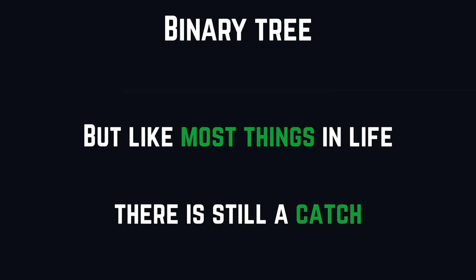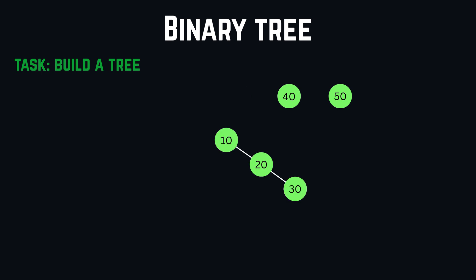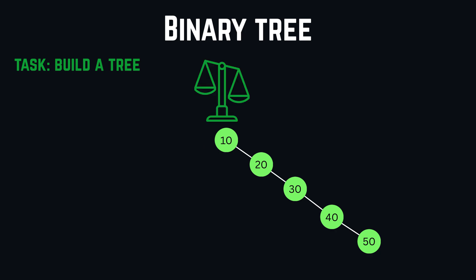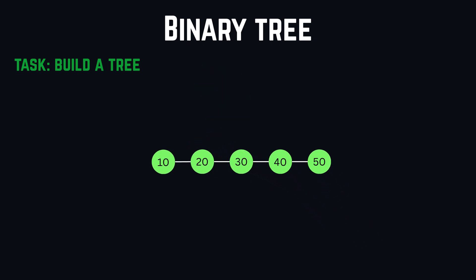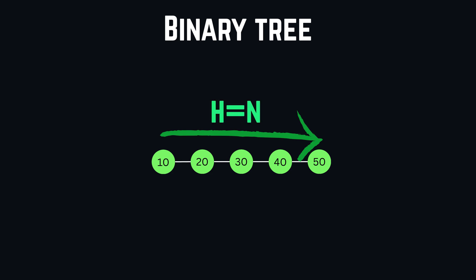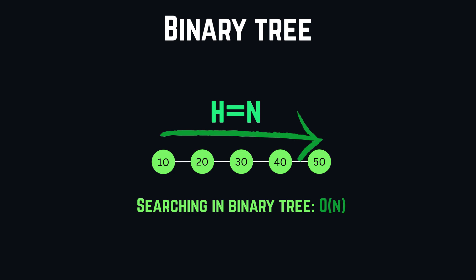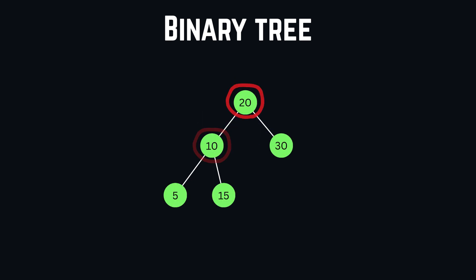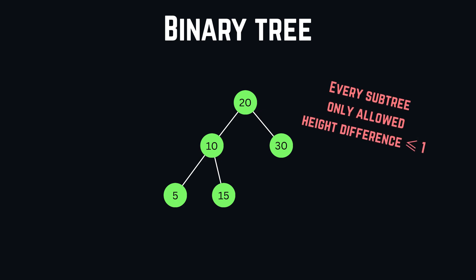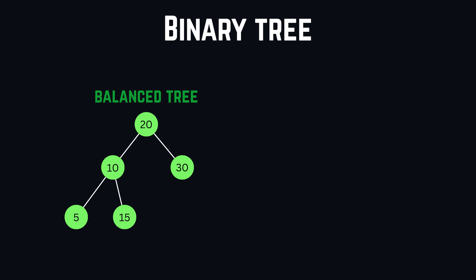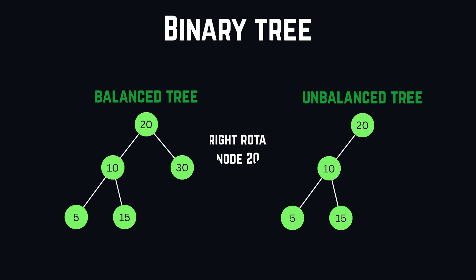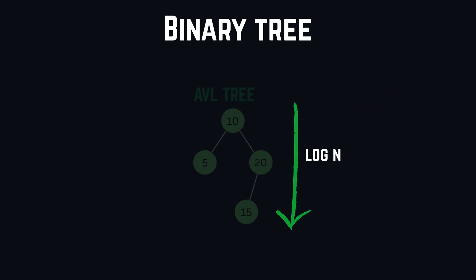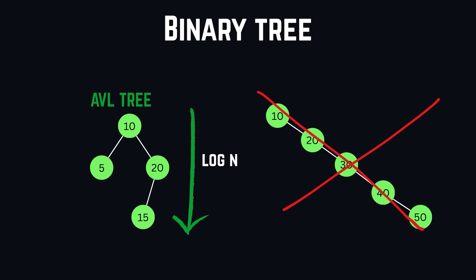But there's still a catch. If we build a binary tree by continuously adding numbers larger than the previously added one, all elements end up on the right side — the tree becomes unbalanced and essentially turns into a linked list, where h equals N, making search O(N). To solve this, we can use a self-balancing binary tree called an AVL tree. An AVL tree automatically keeps itself balanced by ensuring that for every node, the height of the left and right subtrees differ by at most one. If an insertion or deletion causes an imbalance greater than one, we use left or right rotations to restore balance, guaranteeing a tree height of O(log N).